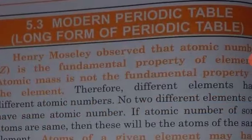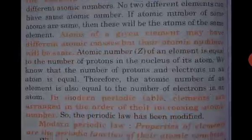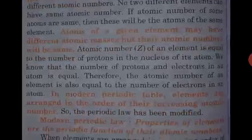Good morning students. Today we will continue the chapter: periodic table classification of elements. The topic is the modern periodic table — the long form of periodic table. In 1913, Henry Moseley showed that the atomic number of an element is a more fundamental property. Atomic number is the number of protons in the nucleus of an atom, and this number increases by one going from one element to the next.